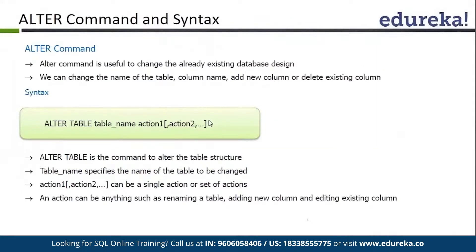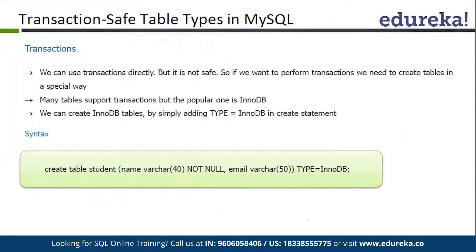You might already be aware of these concepts - table types, InnoDB, and MyISAM. Here you can see we are using CREATE TABLE student, giving the column name, column type and size, NOT NULL, email, column type, size, and type of table. Here we are giving ENGINE equal to InnoDB. If you don't specify this type and are using MySQL 5.6, it will automatically default to InnoDB.